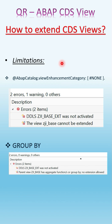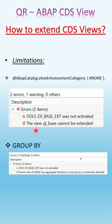There are limitations. For example, if the base view has an annotation called 'view enhancement category' set to 'none' and you try to extend that view, you will get an error message while activating your extended view saying that the base view cannot be extended. Similarly, if the base view has a 'group by' option and you try to extend it, you get an error message saying the parent view has an aggregate function or group by, so no extension is allowed.